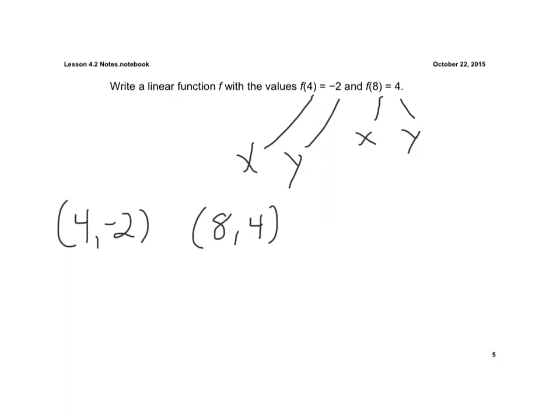So it's the difference of the y's. So I'm going to go 4 minus a negative 2. Again, taking my y's all over 8 minus 4. If I do that, keep, change, change, that's 6 on top. 8 minus 4 is 4. And I reduce that to 3 over 2.